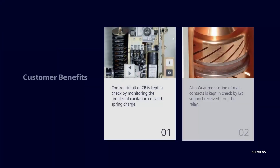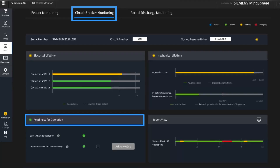As a result of the addition of the Expert View in Circuit Breaker Monitoring View, the control circuit of CB is kept in check by monitoring the profiles of excitation coil and spring charge. Also, monitoring of main contacts is kept in check by I2T support received from the relay. After every switching operation, analysis is done for the main contact as well as the control circuit of the circuit breaker, and the outcome of the analysis decides the readiness for the next operation.